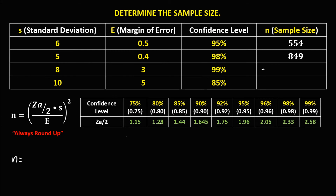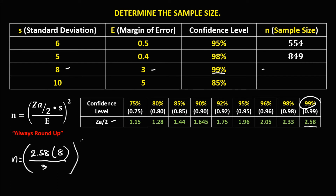For this given, n equals — the confidence level is 99%, and the confidence coefficient is 2.58. So we have 2.58 times the standard deviation, which is 8, over the margin of error, which is 3, quantity to the power 2.